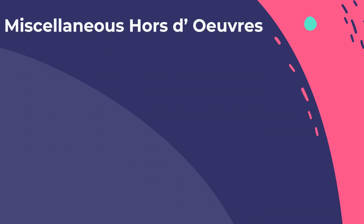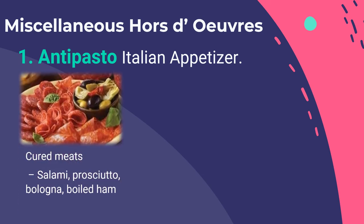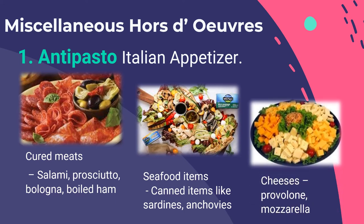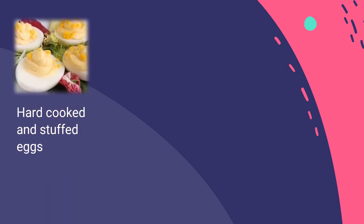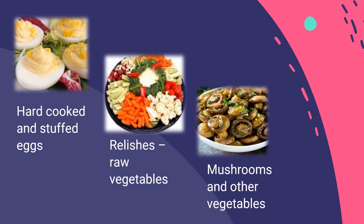Miscellaneous hors d'oeuvres include antipasto, or Italian appetizers. Examples include cured meats like salami, prosciutto, bologna, and boiled ham; seafood items or canned items like sardines or anchovies; and cheeses like provolone or mozzarella. Additional antipasto items include hard-cooked and stuffed eggs, relishes or raw vegetables, and mushrooms and other vegetables. These are a variety of both hot and cold foods served as appetizers in smaller unit or portion sizes.